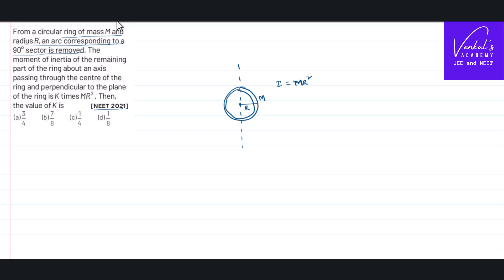Now what he is saying here: moment of inertia when a 90 degree arc is removed from it. What is removed is this, an arc, in such a way that this angle is 90 degrees.